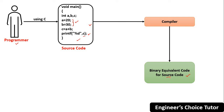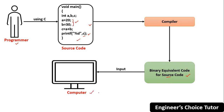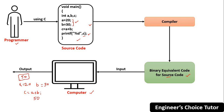This binary equivalent will act as input to our machine, and you will get the output as the sum of two numbers, which is 50 — because A was 20, B was 30, and we are printing A plus B. The code was: C = A + B, and we print C, so the output is 50. So you can say the compiler acts as a translator between the programmer and the machine. This is all about a programming language.